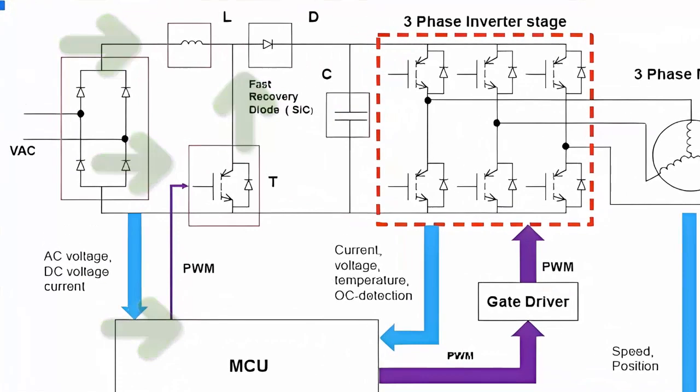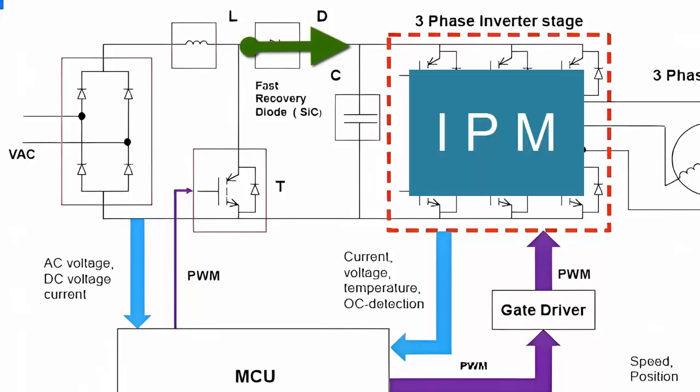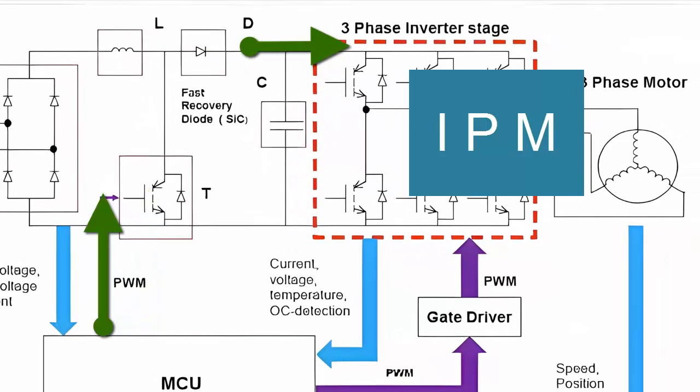The controller of the PFC circuit rapidly turns the transistor IGBT on and off to generate pulsating current in the coil and produce voltage peaks. This circuit is responsible for supplying voltage to the IPM circuit.